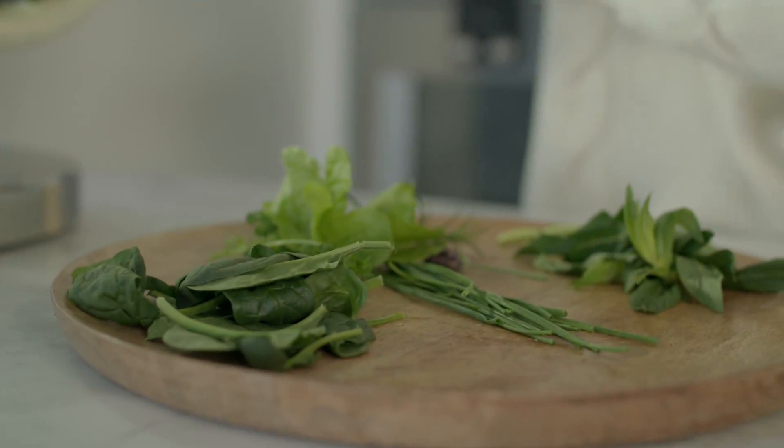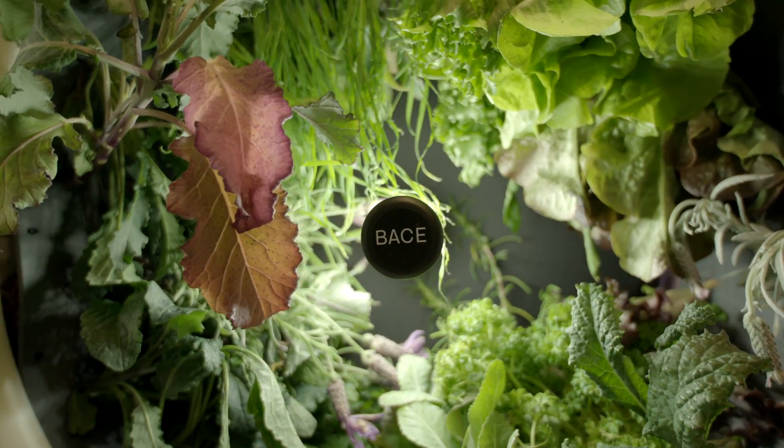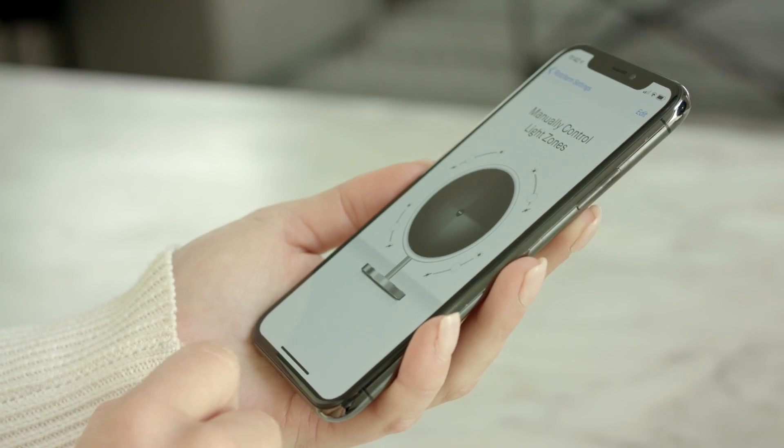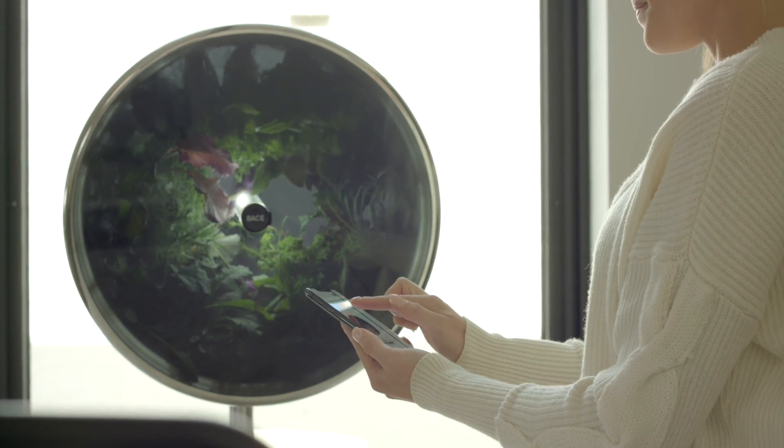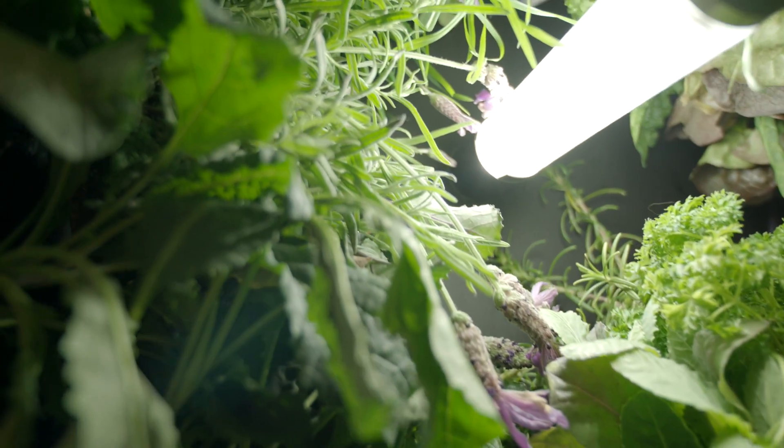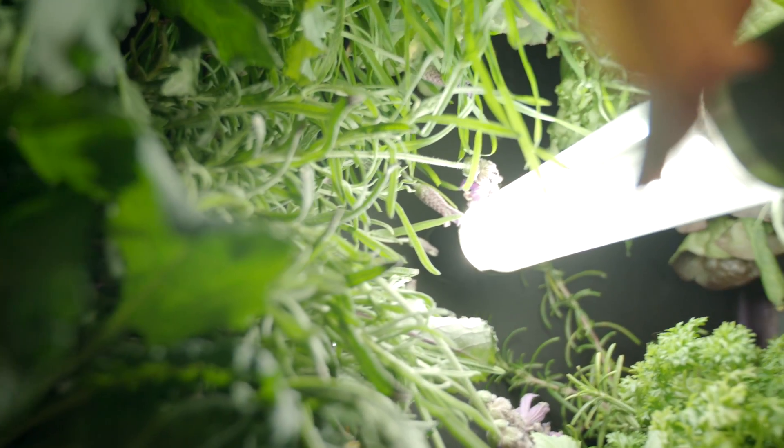Sometimes different species of edible plants thrive under different lighting conditions. For this, we separated the light tube into four zones that can be independently controlled based on what you're growing. Most produce though, needs a lot of bright light.